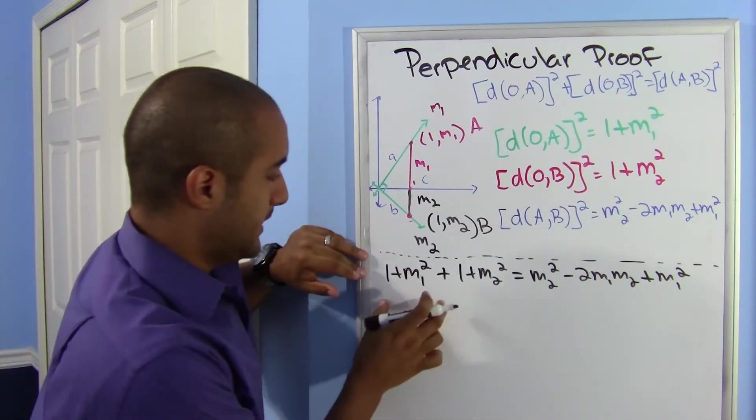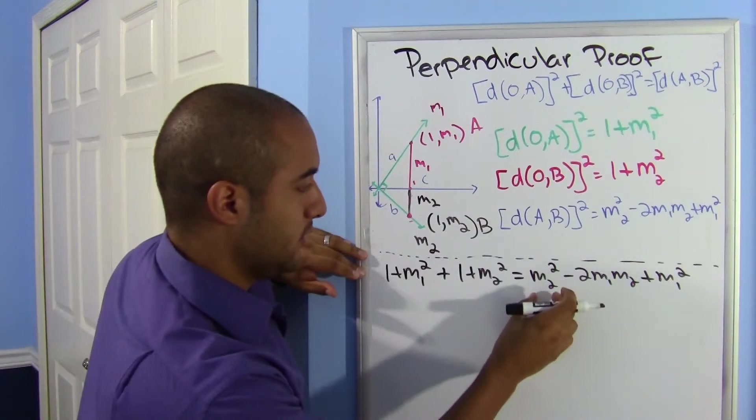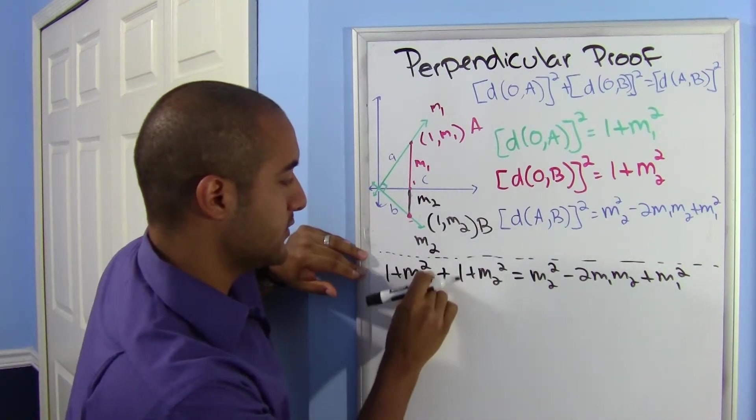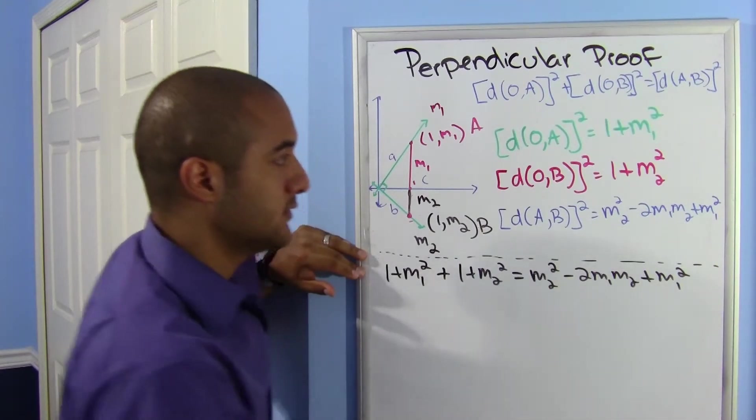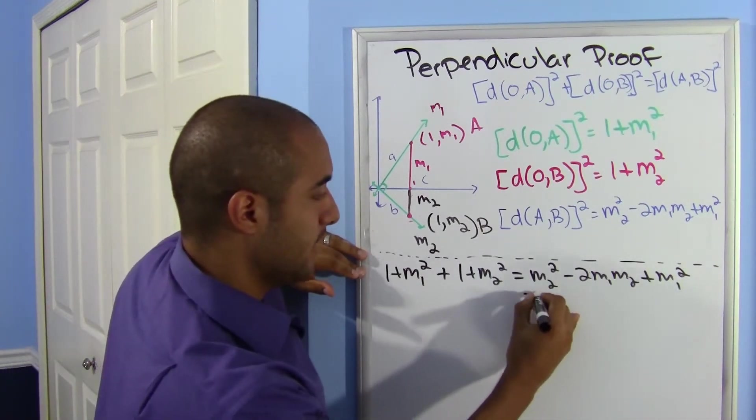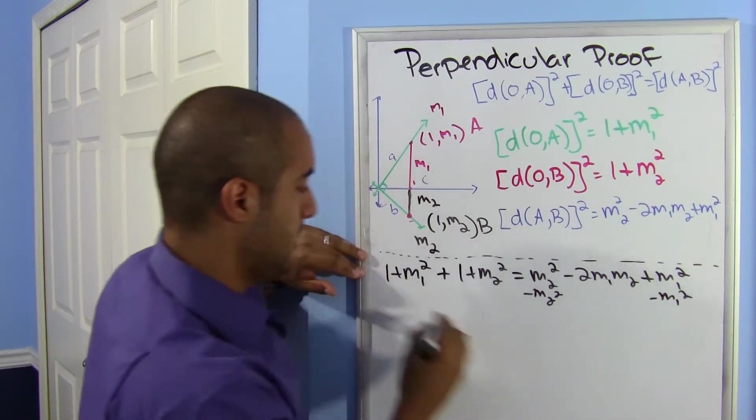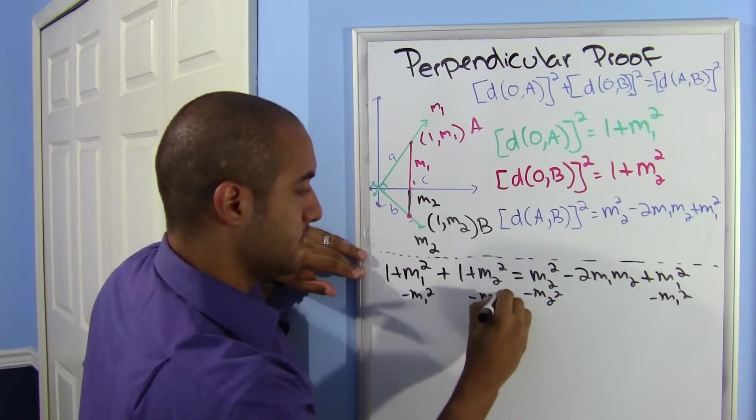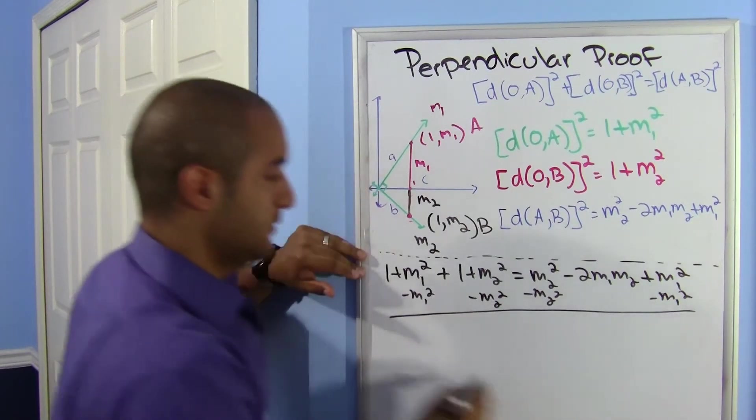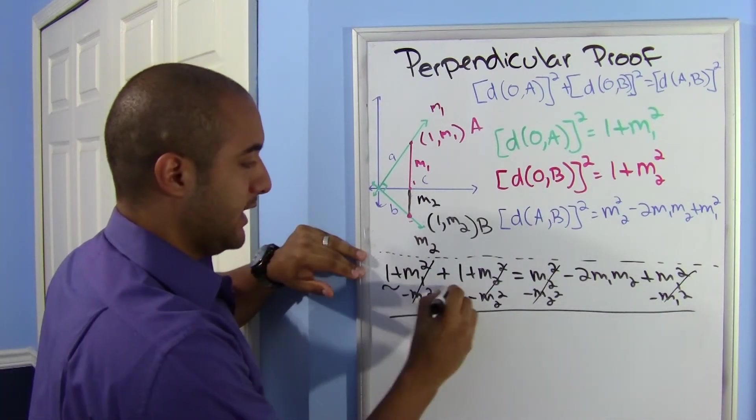I'm going to do a couple things at the same time. I'm going to combine these two, and I'm going to notice that I have m1² and m2² on both sides, so I'm going to put them on the same side. Minus m1² minus m2². Notice that they get cancelled out—this is all gone.